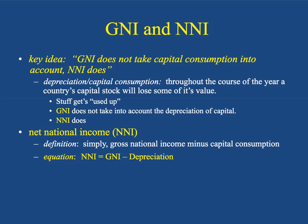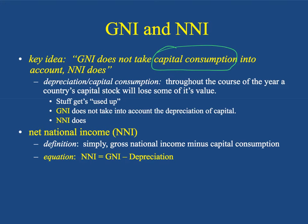Gross national income does not take into account capital consumption, whereas net national income does. All you really need to know is what exactly capital consumption means. If you understand that, which I'm going to explain in a second, then you will understand the difference between gross national income and net national income. Depreciation, or capital consumption — here we go.